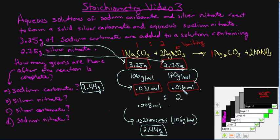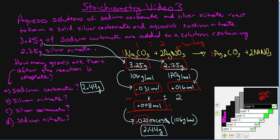AgNO₃ is limiting because it will run out first. Since the ratio is 1:2, I can only use half of 0.016, which is 0.008 moles of Na₂CO₃. The excess Na₂CO₃ is found by subtracting: 0.031 − 0.008 = 0.023 moles excess. To convert that back to mass, I multiply by the molar mass of Na₂CO₃ (106 g/mol).